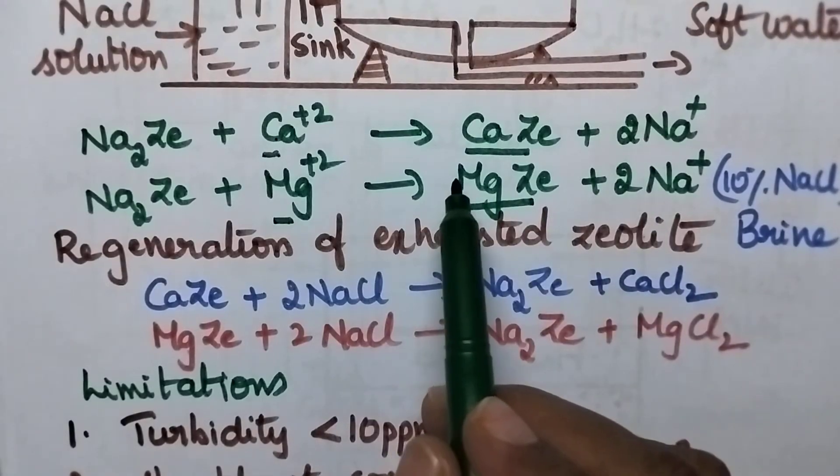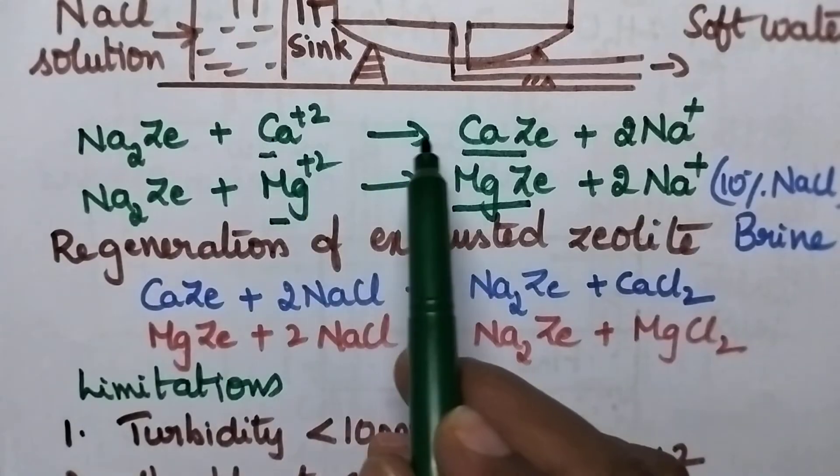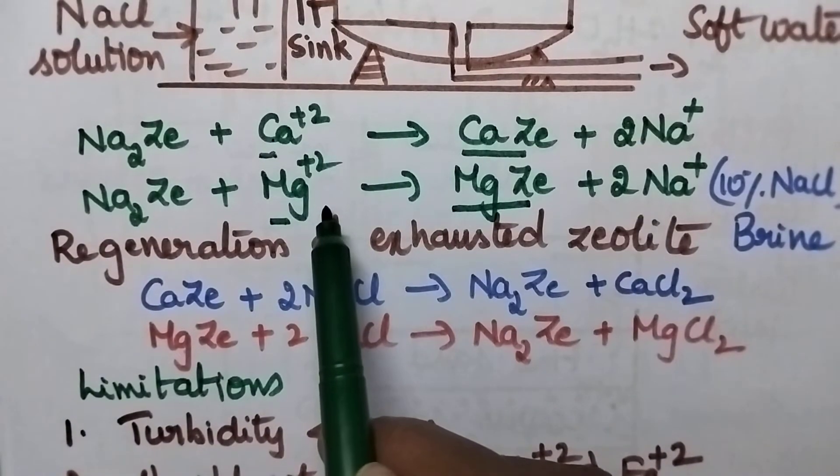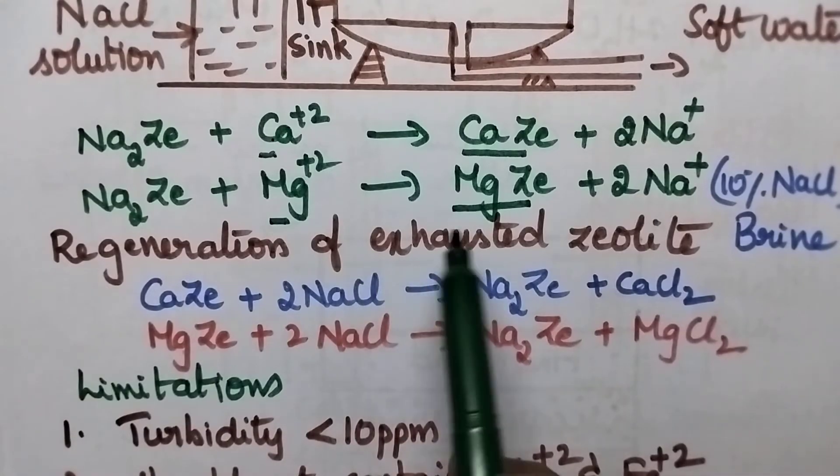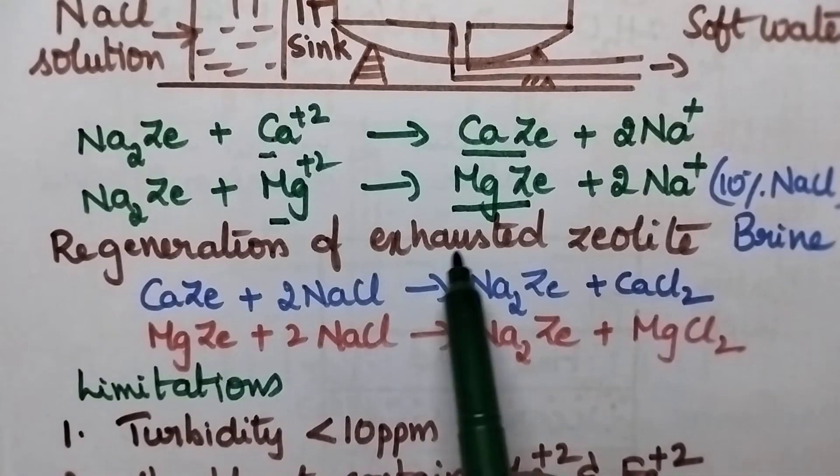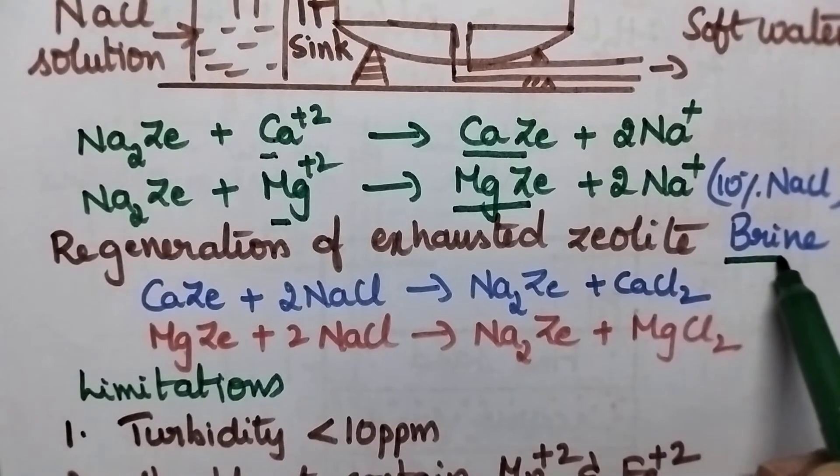So after some time when all the sodium ions present in the zeolite are being replaced by the calcium and magnesium ions then the bed is called as exhausted zeolite bed. So this exhausted zeolite can be regenerated by washing with brine solution.